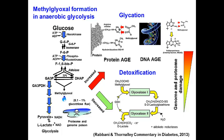Methylglyoxal is produced in this relatively low flux, but it's a very active compound and will modify proteins by glycation — non-enzymatic glycosylation.